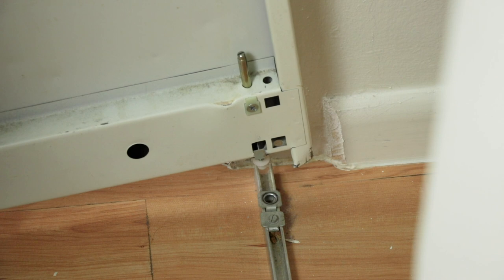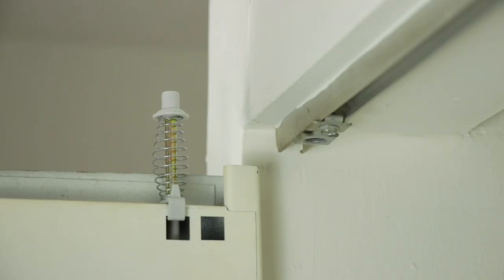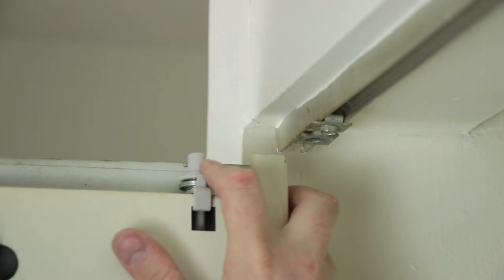To reinstall the door, reverse the removal process by first installing the stationary bottom pivot pin, followed by the remaining spring-loaded pins.